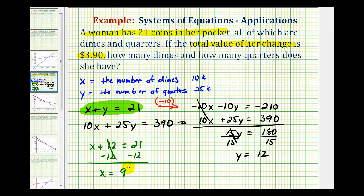So this tells us we have 9 dimes and 12 quarters. Notice how this gives us 21 coins. And 9 times 10 cents plus 12 times 25 cents would give us a total of $3.90.